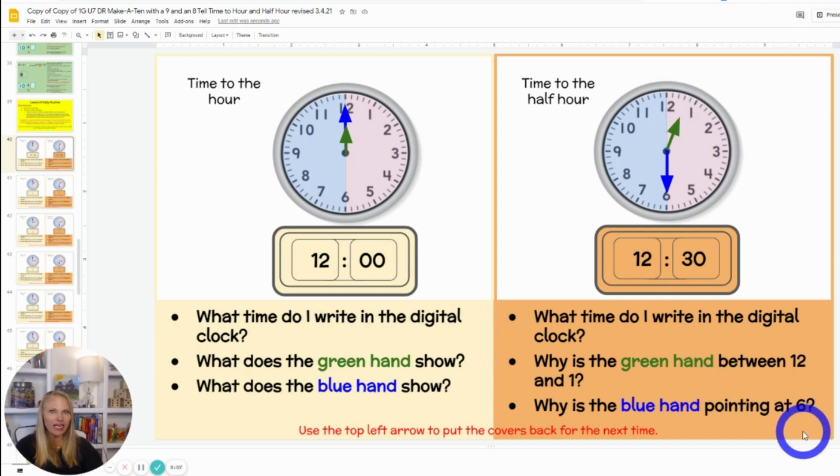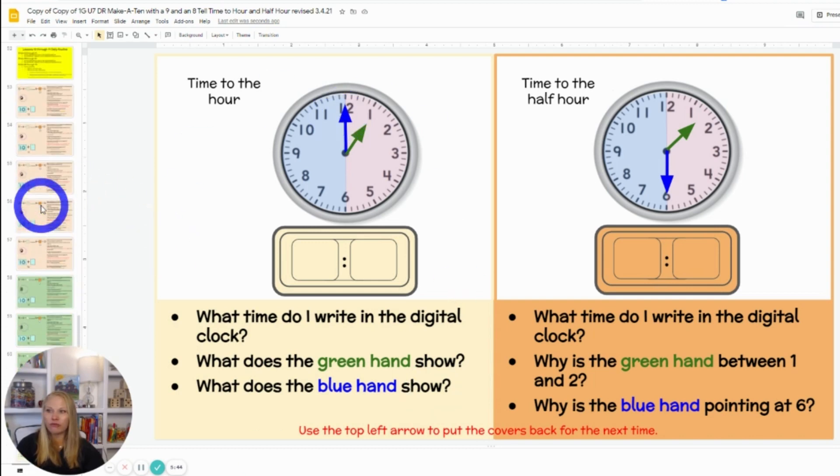Why is the blue hand pointing at the 6? Class, turn and talk really quickly. Why? It's because 6 is halfway around the clock, which 30 minutes is halfway around an hour. So 6 shows me I'm at 30. It's half past that number. So we continue there. What time do I write in the digital clock? Class, 1 o'clock. What does the green hand show? Class, the hour hand. The hour is 1 o'clock. What does the blue hand show? The minute hand. There are zero extra minutes.